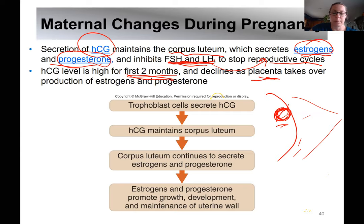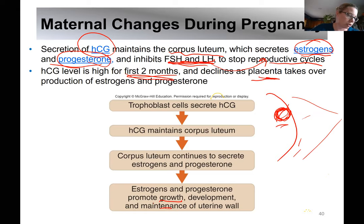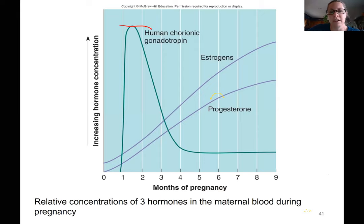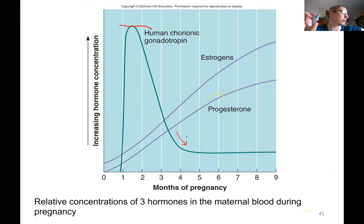Estrogen and progesterone promote growth, development, and maintenance of the uterine wall. We don't want that uterine wall to break down and shed like during menstruation. HCG concentrations are pretty high the first couple of months, then start to drop off, at which point the placenta takes over producing estrogen and progesterone.